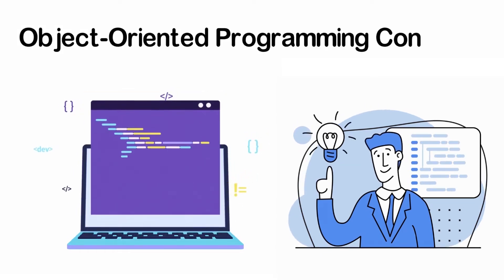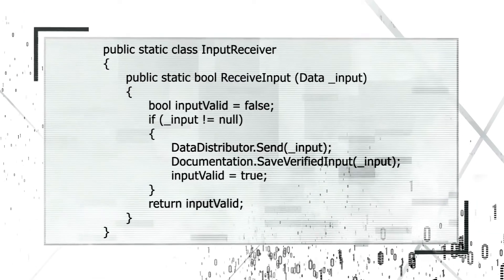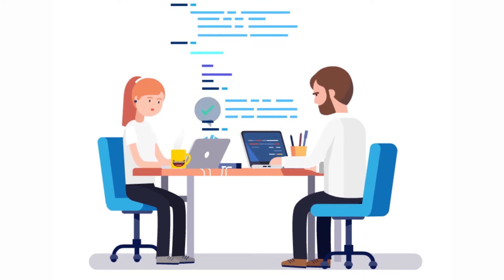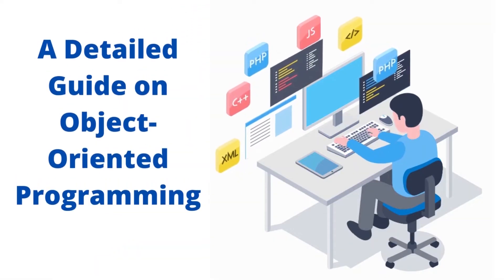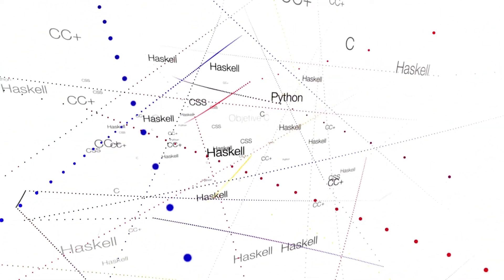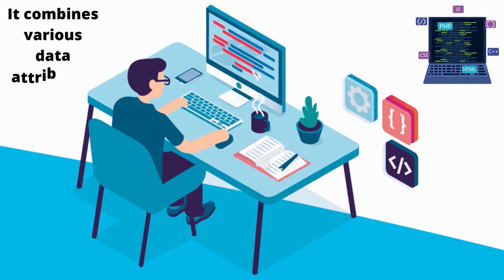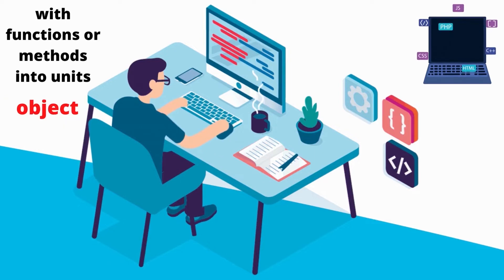Object-Oriented Programming is easily one of the most popular programming paradigms. In this video, we're going to cover its concepts along with interview questions and answers. Object-Oriented Programming is a type that views the programming world as groups of objects. It combines various data attributes with functions or methods into units, and each unit is referred to as an object.